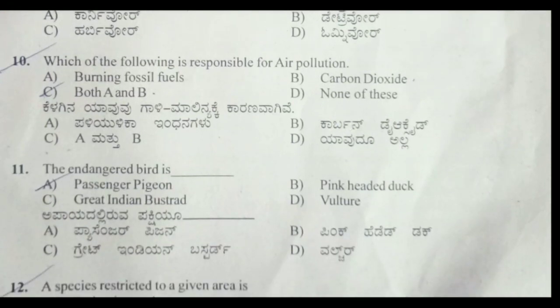Tenth question: which of the following is responsible for air pollution? The correct answer is option C — burning fossil fuels and carbon dioxide, both A and B.